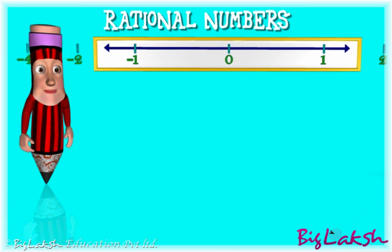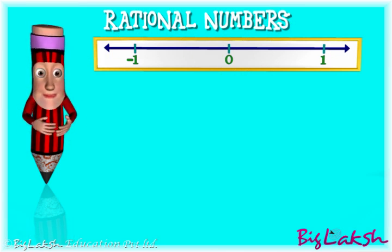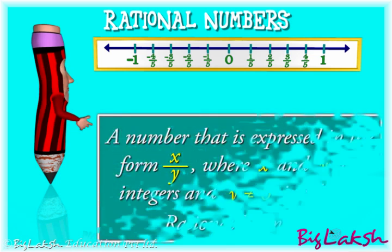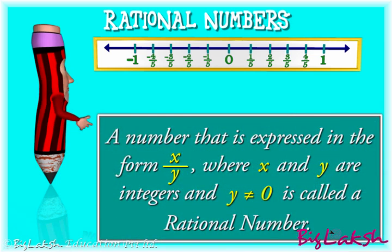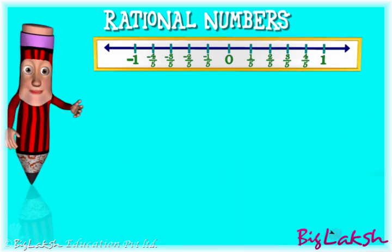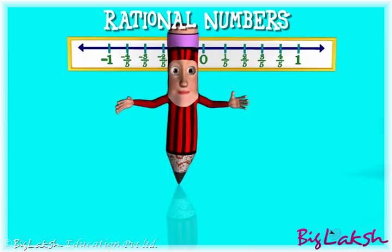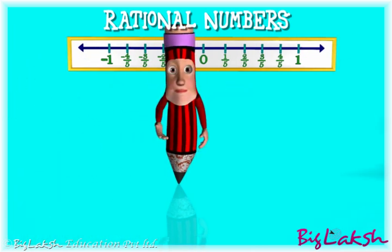Let us move on to rational numbers. You can now observe fractions appearing on the screen. As you are already aware, a number that is expressed in the form of x by y where x and y are integers and y is not equal to zero is called a rational number. Notice that fractions also extend indefinitely on both sides of zero on the number line.